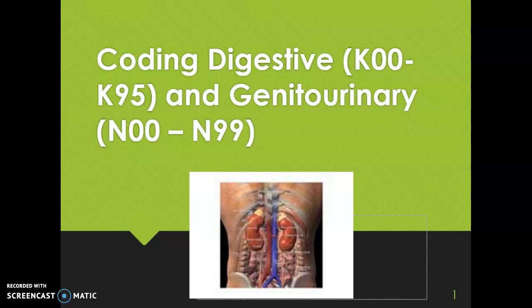Hello everyone and welcome to this video on how to assign ICD-10-CM diagnosis codes for conditions from the digestive and genitourinary systems. These codes will be between K00 to K95 for digestive and N00 to N99 for genitourinary.